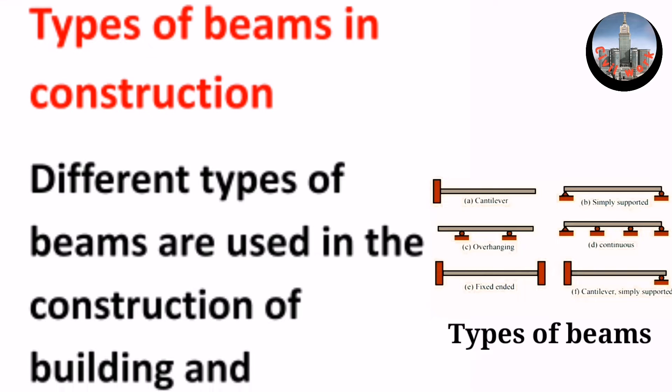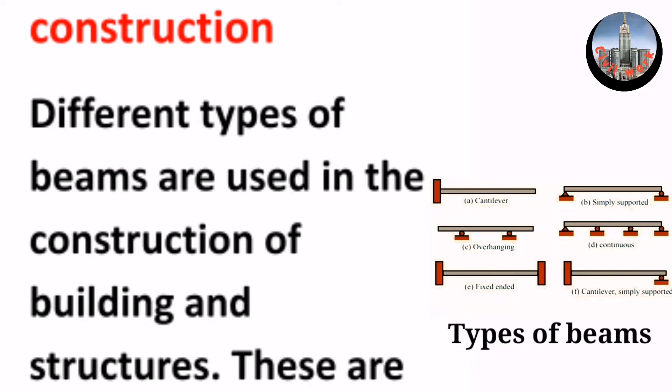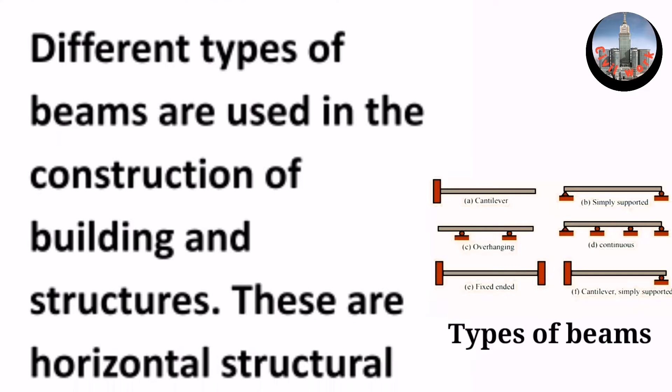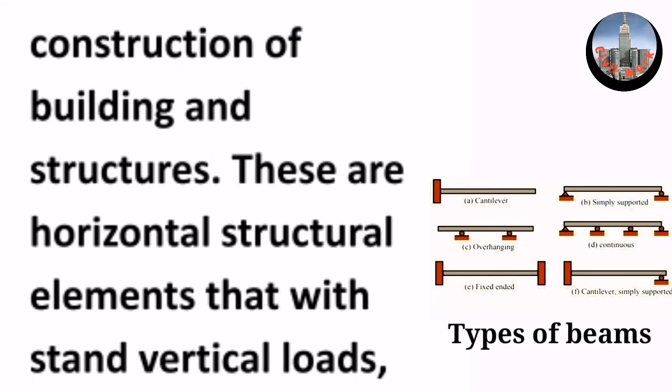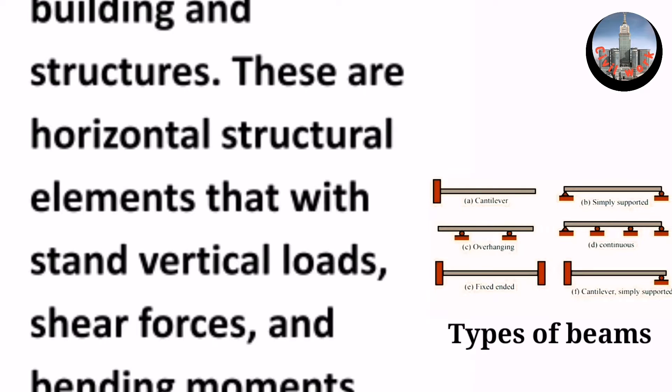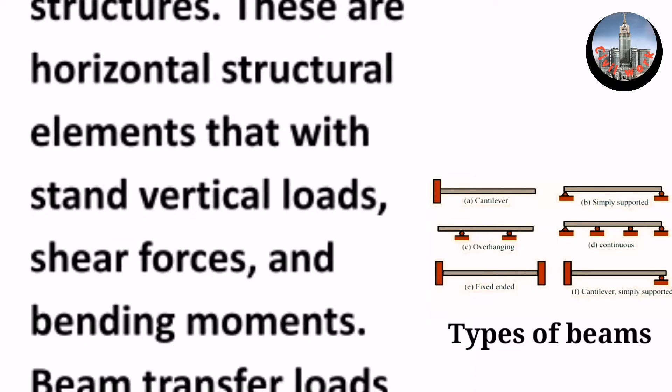Types of beams in construction. Different types of beams are used in the construction of buildings and structures. These are horizontal structure elements that withstand vertical loads.